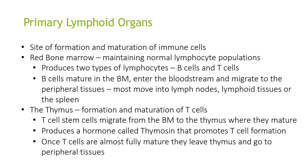There is also the thymus, which is a primary lymphoid organ where formation and maturation of T cells occurs. T cell stem cells migrate from the bone marrow to the thymus where they mature. The thymus produces a hormone called thymosin that promotes T cell formation. Once the T cells are almost fully mature, they leave the thymus and go to peripheral tissues.